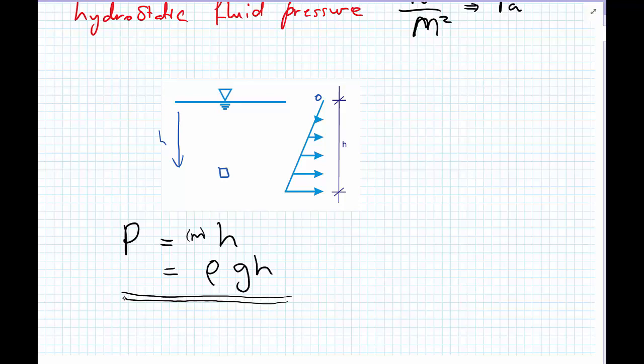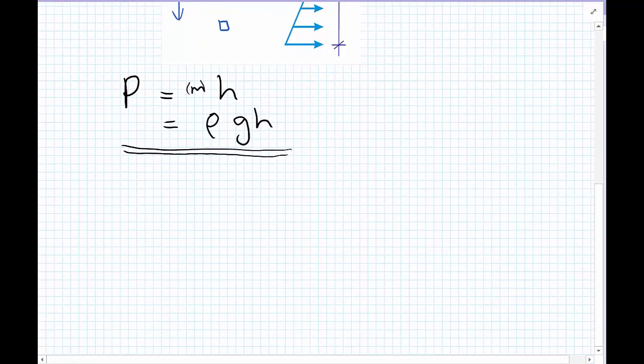Now we have this statement: pressure equals rho GH. What we're going to do now, just to satisfy ourselves, is have a look at the dimensions for this system.